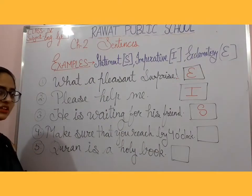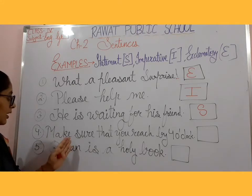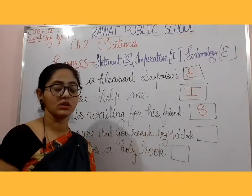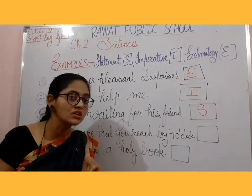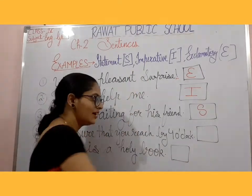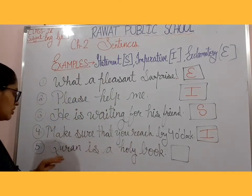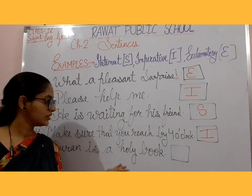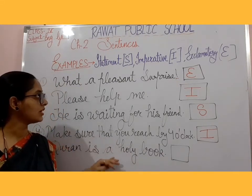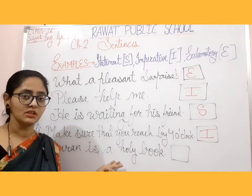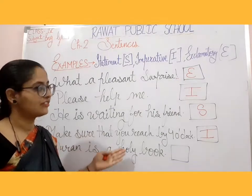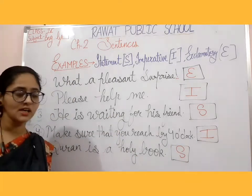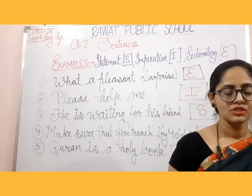The fourth example is 'Make sure that you reach by four o'clock.' 'Make sure' means someone is commanding you, and commanding makes it an imperative sentence (I). The fifth is 'Quran is a holy book.' This is not an expression, request, command, or suggestion — it is a fact, so it is a statement (S). This is how we can understand and distinguish between the types of sentences. I hope all of you understand this. Thank you students, goodbye.